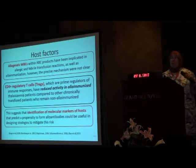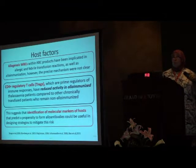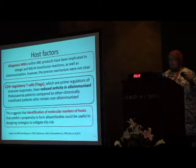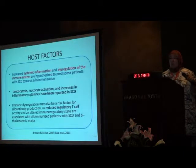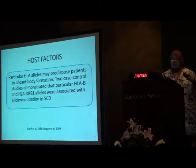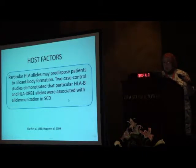One marker of inflammation is T-regulatory cells (T-regs), which are the prime regulators of the immune response. Recipients who develop alloimmunization are those who have lower T-reg values and reduced activity. This has led to thinking: can we search for molecular markers to identify the host at risk? HLA typing is also important — some HLA alleles may predispose to alloantibody formation. In sickle cell disease, HLA-B and HLA-DRB1 are associated with alloimmunization.